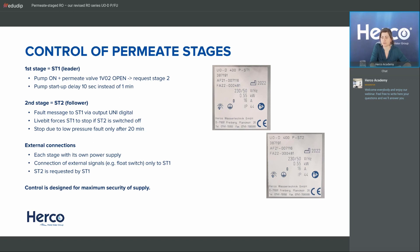Regarding the question about the two PR recirculations being standard or optional: the connection hoses AA and BB are within scope of Herco — when we deliver the unit it comes with the connections. The permeate recirculation of the first stage is optional; the permeate recirculation of the second stage is standard. The reason: you really need quality after the second stage, and since the client typically wants less than 5 microsiemens all the time, we decided to include the second PR as standard.